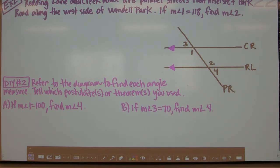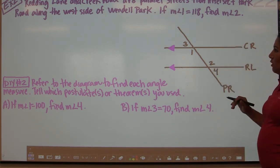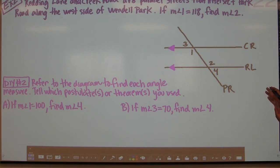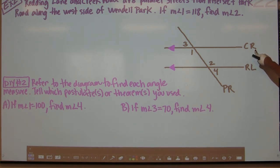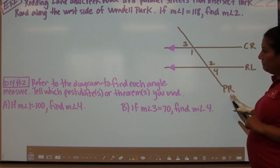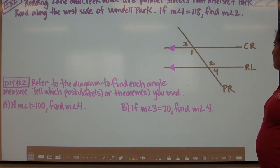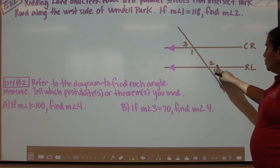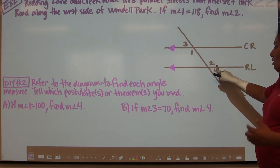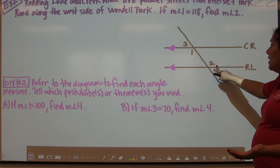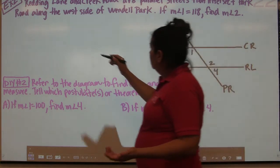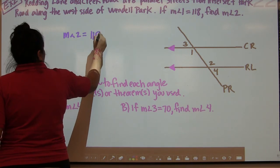Here's example 2. In your textbook it has a nice little map, but I just drew the basic structure needed for the diagram. Redding Lane — abbreviated RL — and Creek Road — CR — are parallel streets that intersect Park Road, which is the transversal, along the west side of Wendell Park. If the measurement of angle 1 equals 118, find the measurement of angle 2. Angle 1 and angle 2 are alternate interior angles, so they're congruent. The measurement of angle 2 should also equal 118.